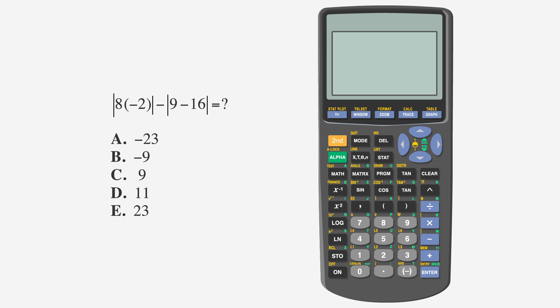What's the value of the absolute value of 8 times negative 2 minus the absolute value of 9 minus 16? A is negative 23, B is negative 9, C is 9, D is 11, and E is 23.